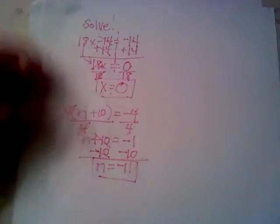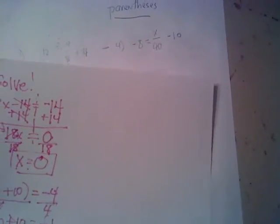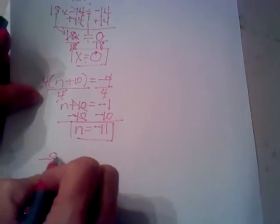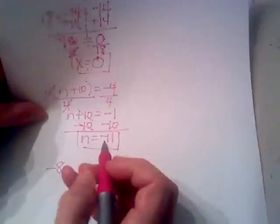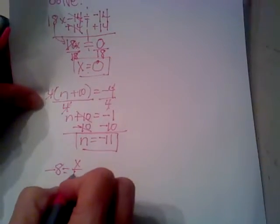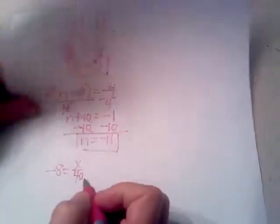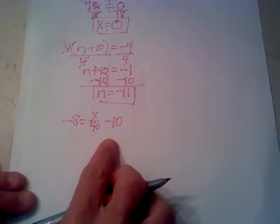So that's how you solve that equation. Now my third equation has got a fraction in it. I'm going to take negative 8 equals x over 40 minus 10. Okay, so let's talk about how to do this one.